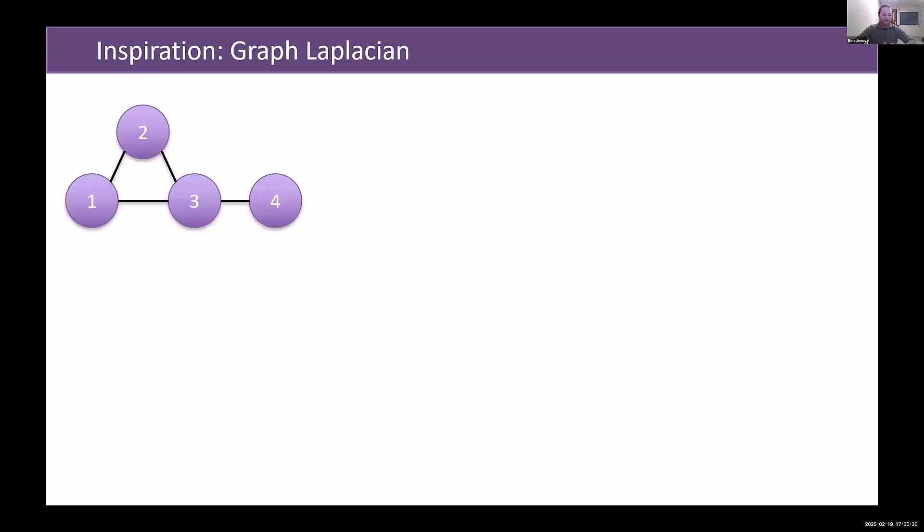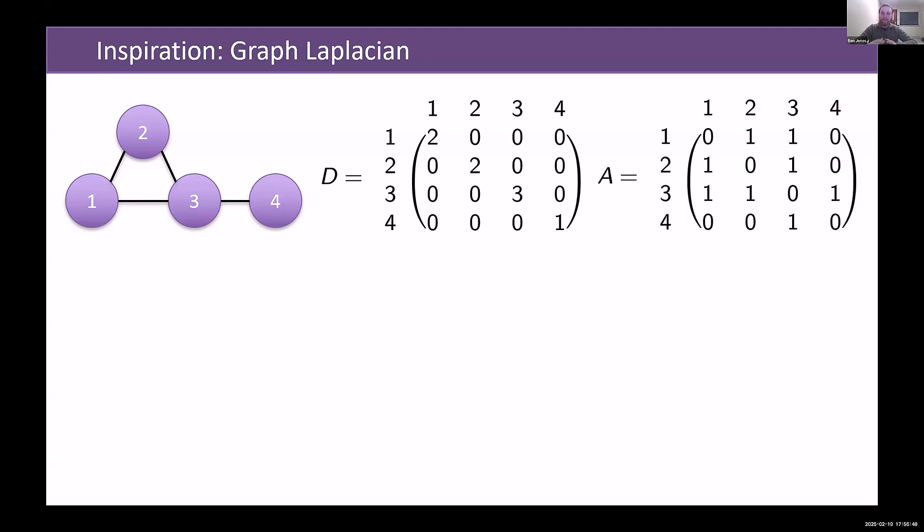It comes from something called the graph Laplacian. The graph Laplacian is a concept from the 1800s where you take a graph, you form its degree matrix, which for each vertex you just record how many edges are connected to it and put that in the corresponding diagonal. Then there's an adjacency matrix, which just records a one if there is an edge between the two vertices. And then we form the graph Laplacian as the difference between these two.